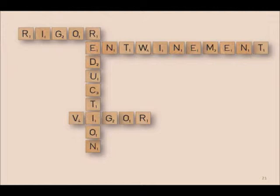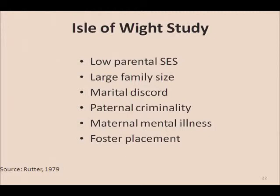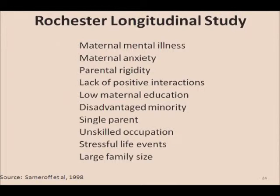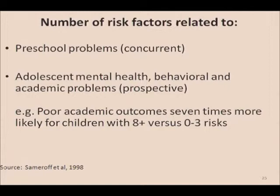The underlying theory is that exposure to multiple risks, whatever effects they have individually, affects outcomes — the number of adversities in a child's environment affects the outcome independent of any one risk. The seminal study was done by Sir Michael Rutter in the Isle of Wight study, assessing six risks. No one risk significantly raised rates of childhood mental disorders, but rates increased geometrically with greater number of risks: with two risk factors, children had a four-fold increase, and with four risk factors, a ten-fold increase in disorders. In the subsequent Rochester Longitudinal Study looking at ten risks, children with eight or more risks had rates of poor academic performance seven times as great as those with zero to three risks.